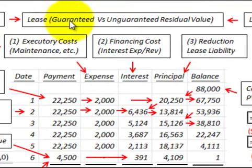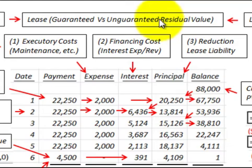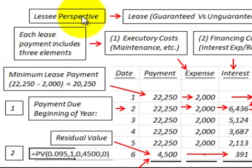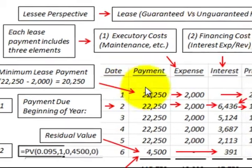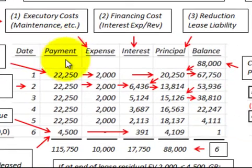Here we're going to be looking at lease residual values — specifically a guaranteed residual value versus an unguaranteed residual value — from the lessee's perspective. That's the company that's leasing and using the equipment. We'll start with the guaranteed residual value and look at how it fits into the amortization schedule for this lease.